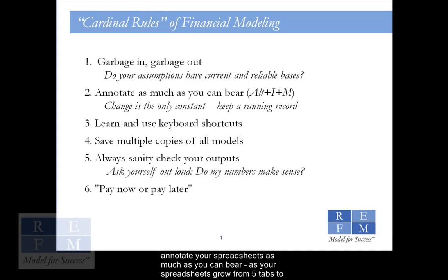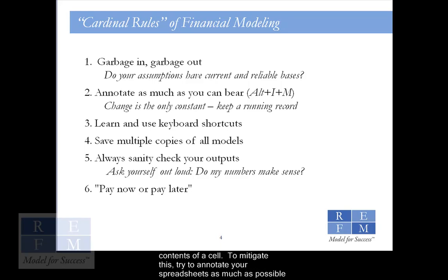Secondly, we encourage you to annotate your spreadsheets as much as you can bear. As your spreadsheets grow from 5 tabs to 15 tabs to 50 tabs, you will be at risk of forgetting important information that determines the contents of a cell. To mitigate this, try to annotate your spreadsheets as much as possible and keep a running record of the thought processes that determine the contents of each cell.